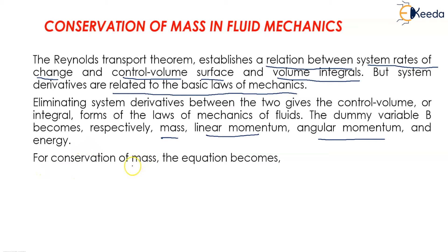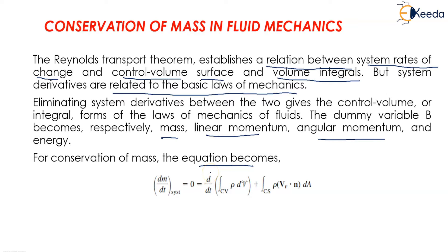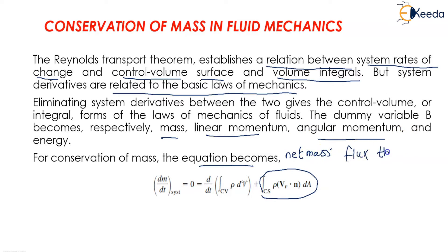For conservation of mass, the equation becomes dm/dt in the system is equal to zero. This means it is independent of time and can be written as d/dt multiplied by the integral of ρ dV in the control volume, plus the integral over the control surface of ρ times velocity dotted with N times dA. This whole term represents the net mass flux through the cross section.